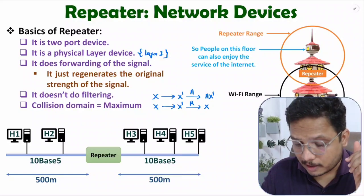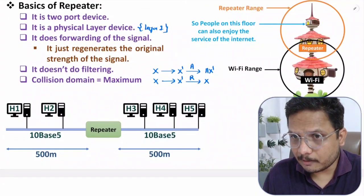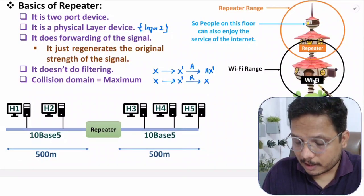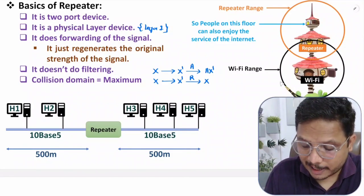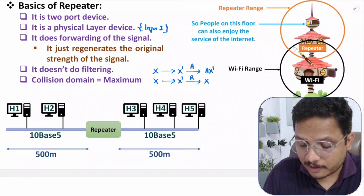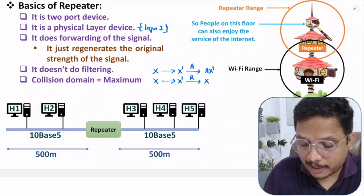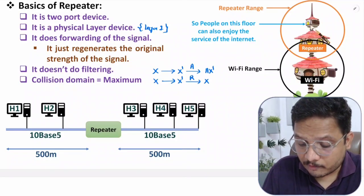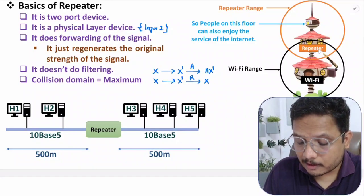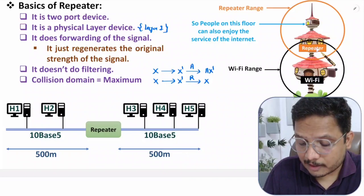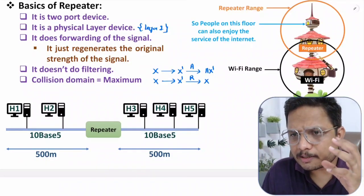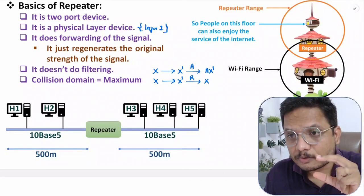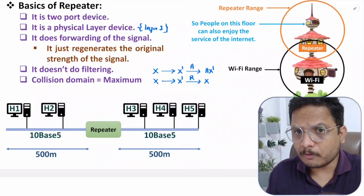Here is a practical example of how a repeater is used. On this floor we have one Wi-Fi, and the black curve shows the range of the Wi-Fi. Now, a person staying on the upper floor cannot access this Wi-Fi because of range limitation. So if we place a repeater on the second floor, it regenerates the Wi-Fi strength there, and the person on that floor can now access the internet. This shows that a repeater is used to enlarge the range of a network.